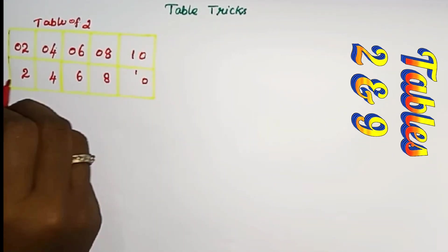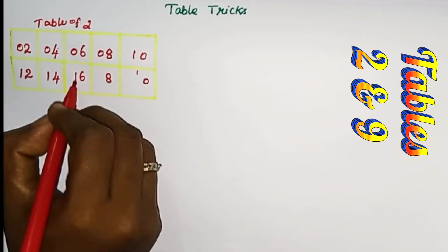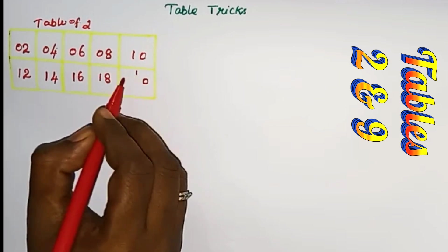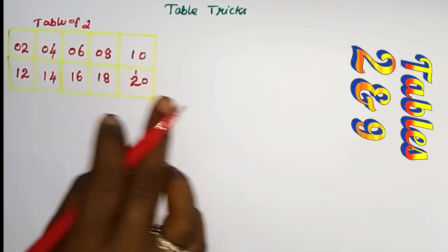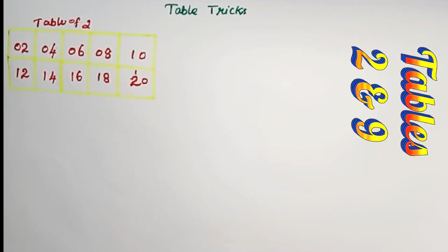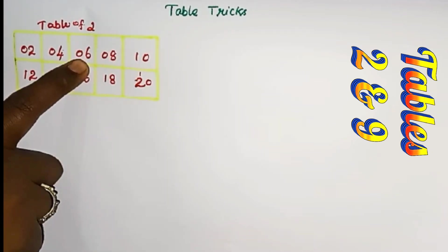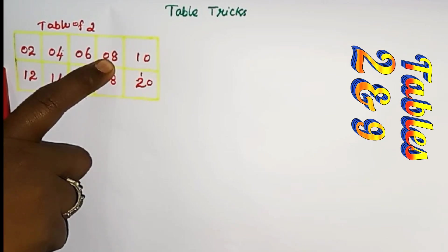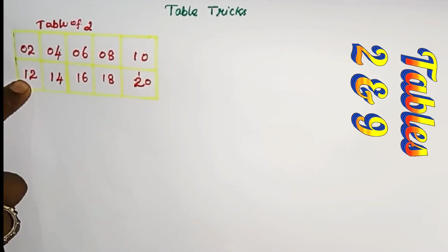Next row you have to write 1. 1, 1, 1, 1. 1 plus 1 is 2. So 2, 1, 2 is 2. 2 2's are 4. 2 3's are 6. 2 4's are 8. 2 5's are 10.